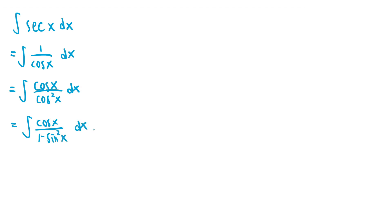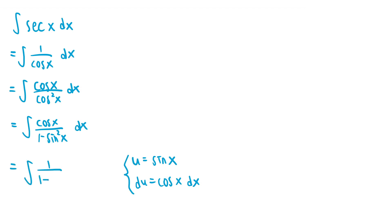The great thing about this is that the denominator is an expression in terms of sine of x, and we have a single cosine of x term in the numerator, which is the derivative of sine of x. This means we can do the substitution u equals sine of x. So if we let u equal sine of x, then du is equal to cosine x dx. So then we can rewrite the integral as the integral of 1 over 1 minus u squared du, since the cosine x dx is replaced by du, and 1 minus sine squared of x is just replaced by 1 minus u squared.